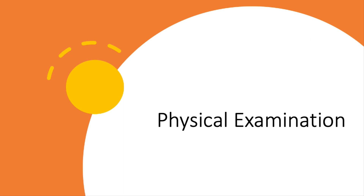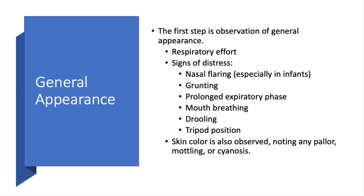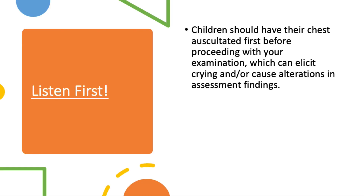For physical examination, you always want to know the child's general appearance. Look at their respiratory effort — can you see any nasal flaring? Do they look like they have a prolonged expiratory phase, which might clue you in to an obstructive process? Do they look comfortable, and are they a normal skin color? Remember, you always want to listen first, specifically in younger children, because when they start crying this might change your physical examination quite significantly.